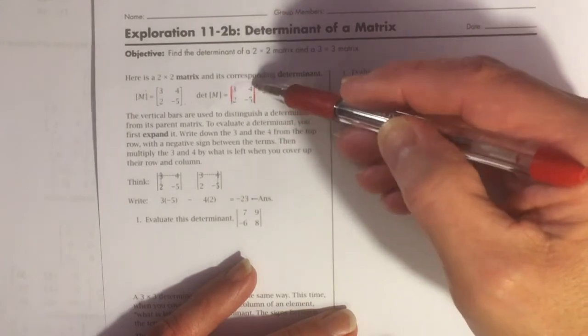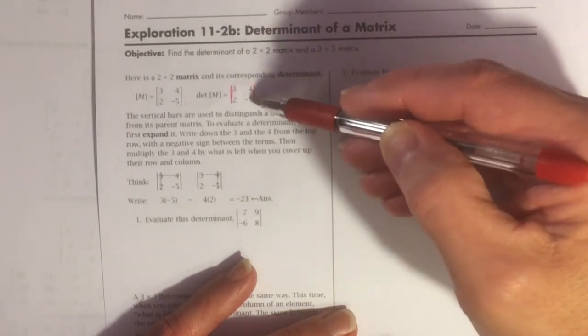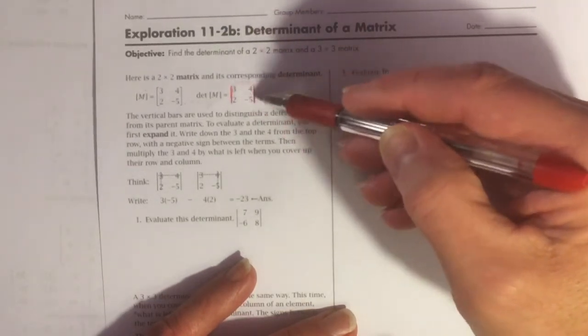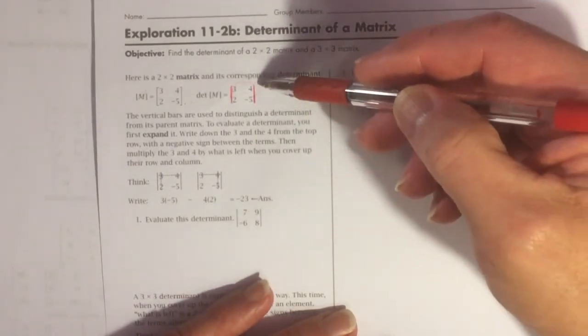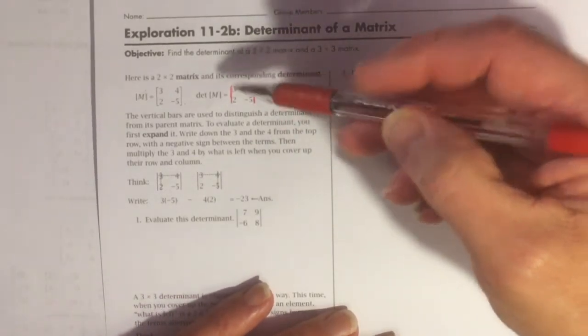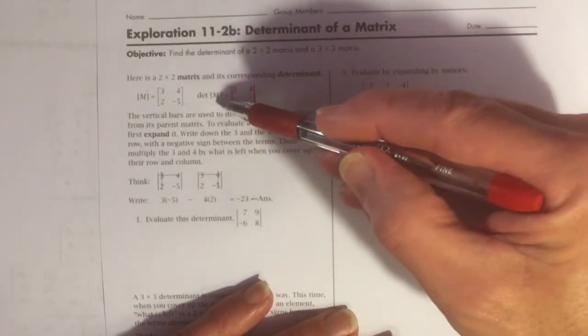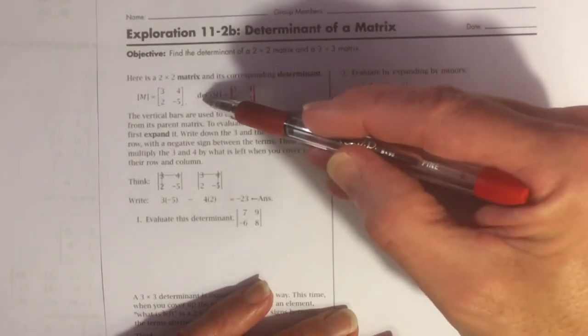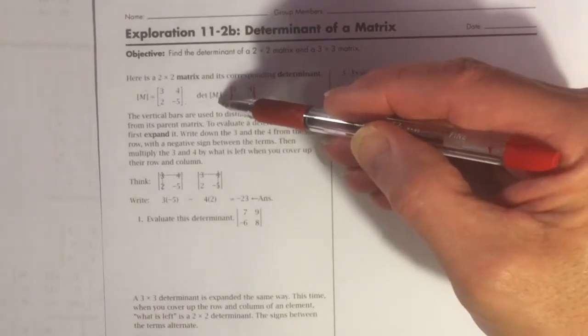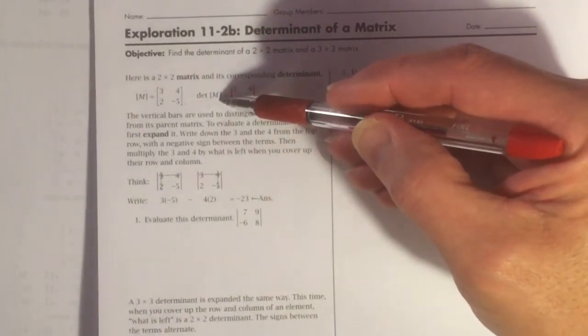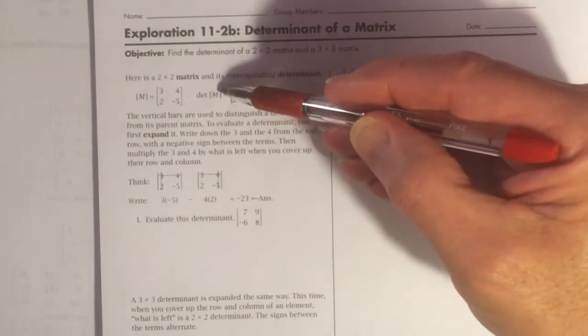This is not a matrix. This is a determinant. But you have to do some work to find out what that number is, what the determinant is. This is another way to write the determinant. This abbreviation and then the identification of the matrix right in there.